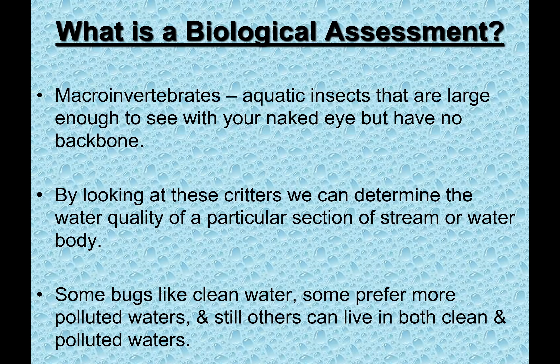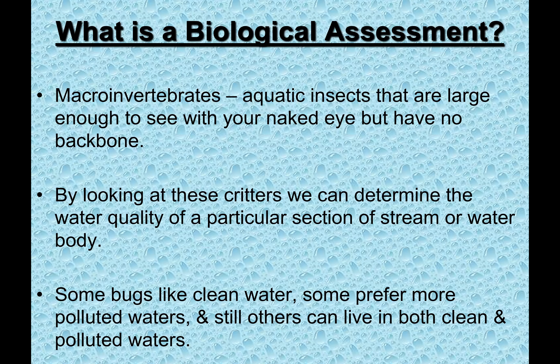By looking at these critters, we can determine the overall water quality of a particular stream section. Some like really clean water, some prefer more polluted water, and others can live in both. We typically do these assessments twice a year — usually in the spring and fall — to get a good representation of what's going on in the stream.